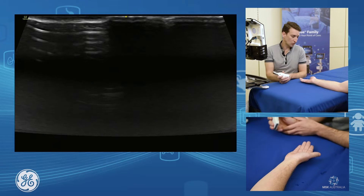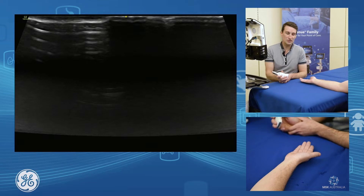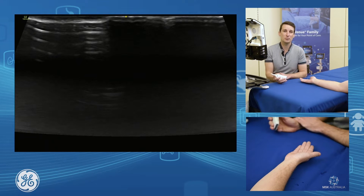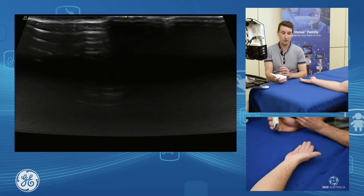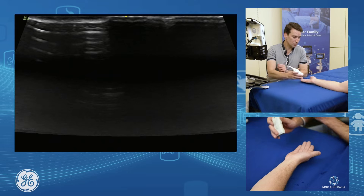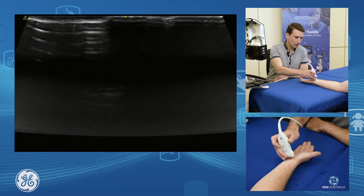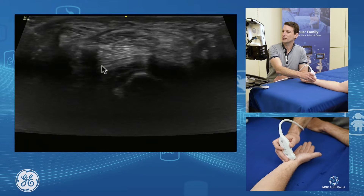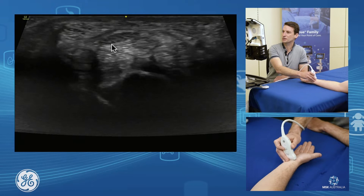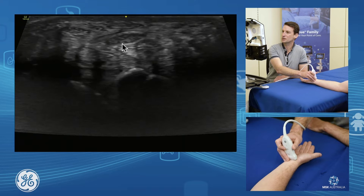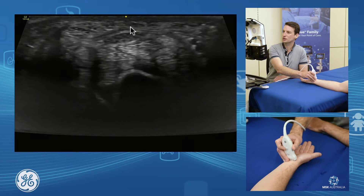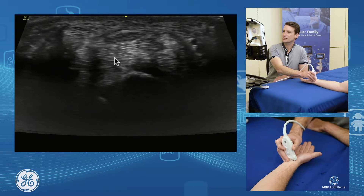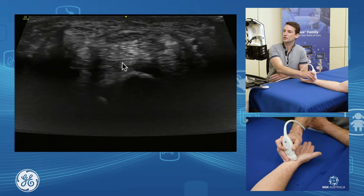We're going to assess the volar wrist - a few of the tendons - and also talk about the median nerve and assessment of carpal tunnel syndrome. To pick up the median nerve, I find the wrist crease and place the probe on in transverse. We have our median nerve sitting just below our fascia with our deep flexor tendons of the fingers below.